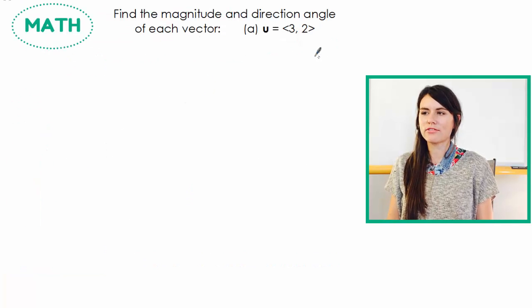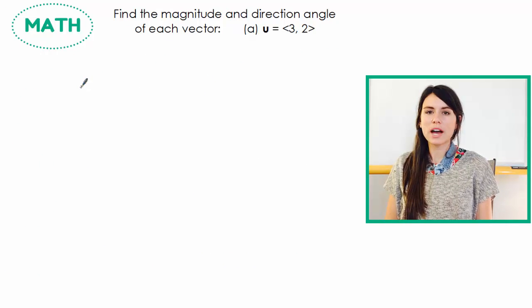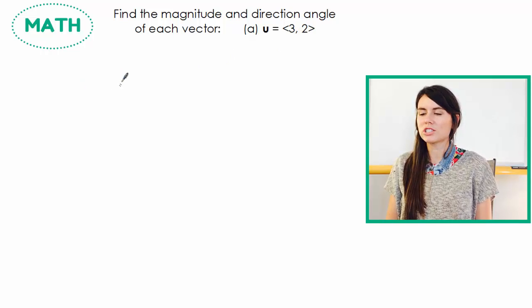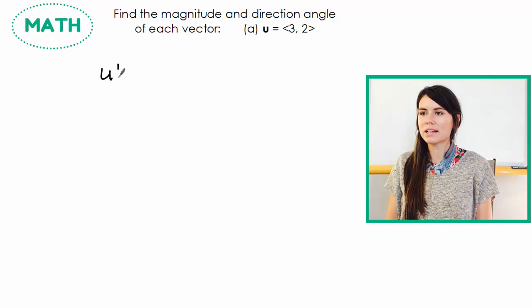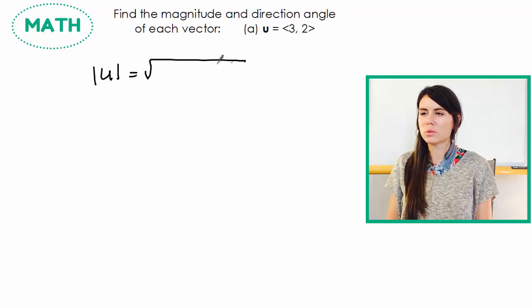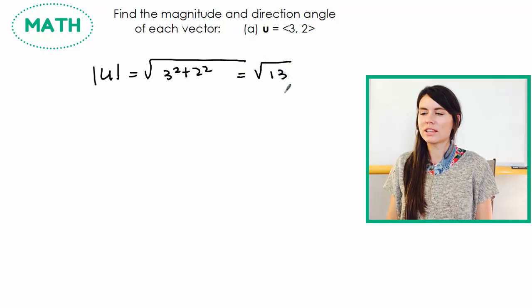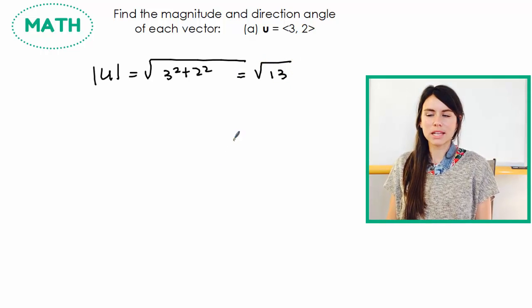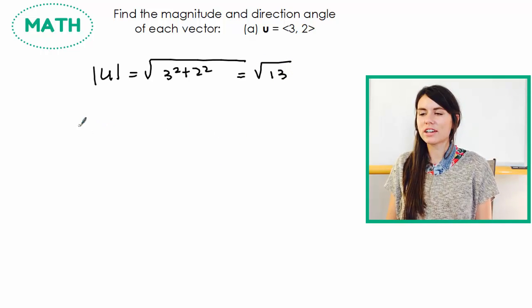Alright, so we're going to do A first. So the first thing, you have to find the magnitude first. So I'm going to find the magnitude of U. So the magnitude of U is just going to be the square root of 3 squared plus 2 squared, which is the square root of 13. Easy. That one's easy. And then I have to find theta.